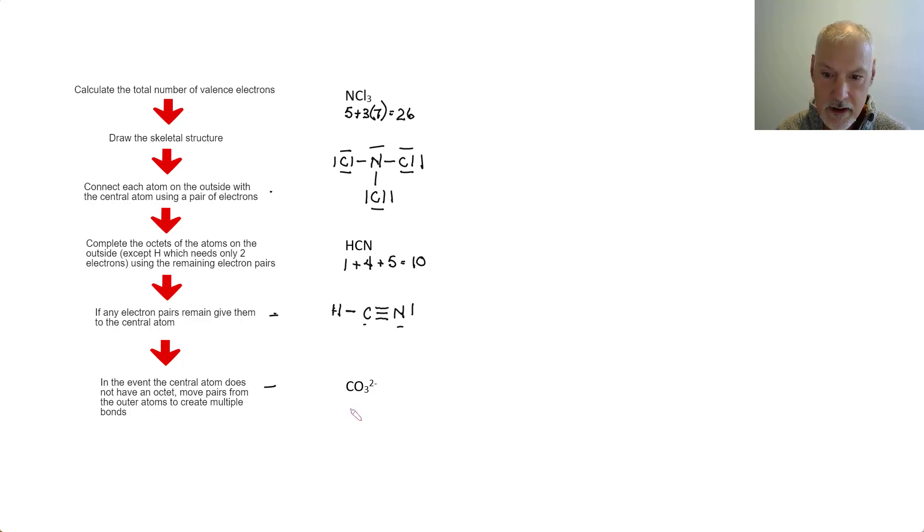We can also apply this to drawing ions. So carbon has four, three oxygens at six apiece. And the negative two means I have two more electrons, which gives me 24 electrons in my picture. So I'll start here by putting carbon in the middle. I'll put the three oxygens around it. And the first place I put them is there.